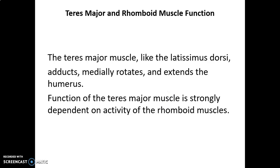Another important combination is the teres major and rhomboid muscles working together. The teres major, like the latissimus dorsi, is a medial rotator and also plays a role in stability of the humerus in the glenohumeral joint. The teres major adducts, medially rotates, and extends the humerus, but its function is strongly dependent upon the activity of the rhomboid muscle, which must stabilize the scapula to give the teres major enough leverage to act on the humerus.